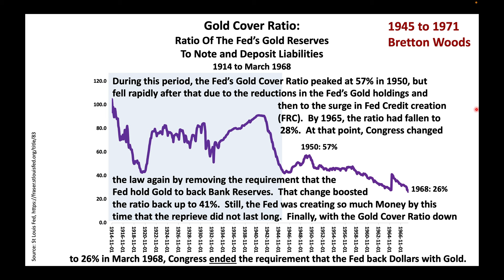During this period, the Fed's gold cover ratio peaked at 57% in 1950, but fell rapidly after that due to the reduction in the Fed's gold holdings and then to the surge in Fed credit creation. By 1965, the ratio had fallen to 28%. At that point, Congress changed the law again by removing the requirement that the Fed hold gold to back bank reserves. That change boosted the ratio back up to 41%.